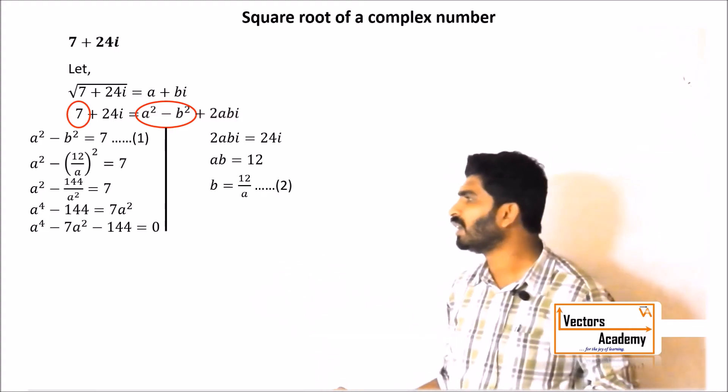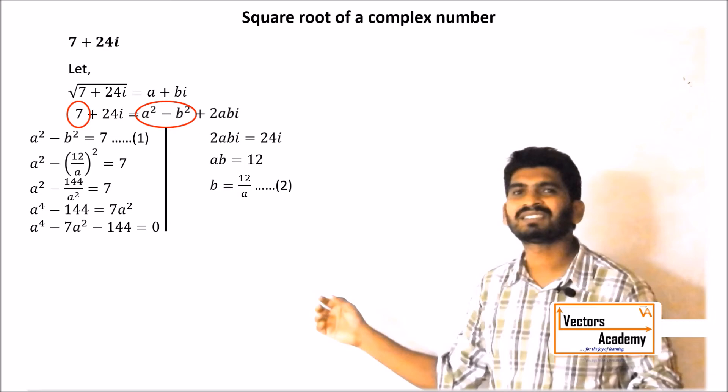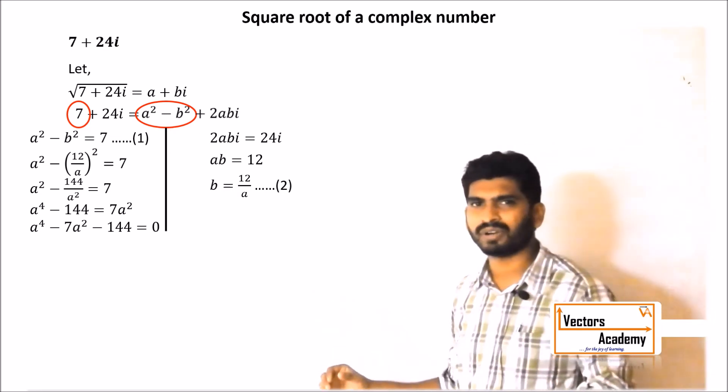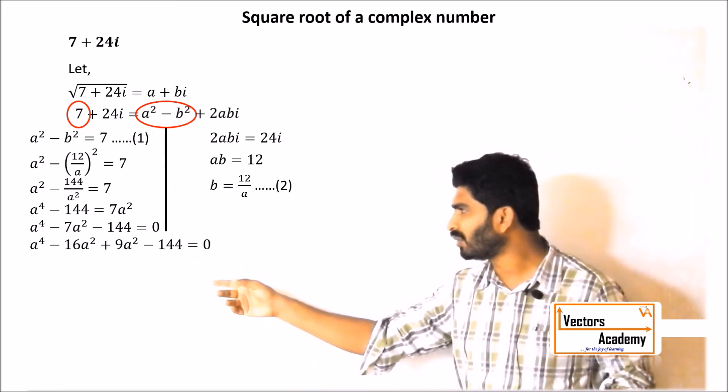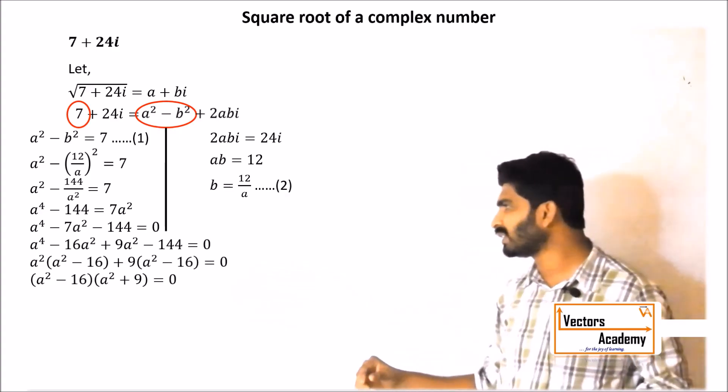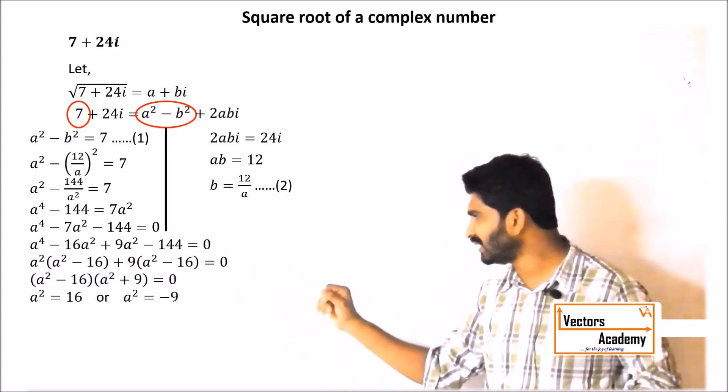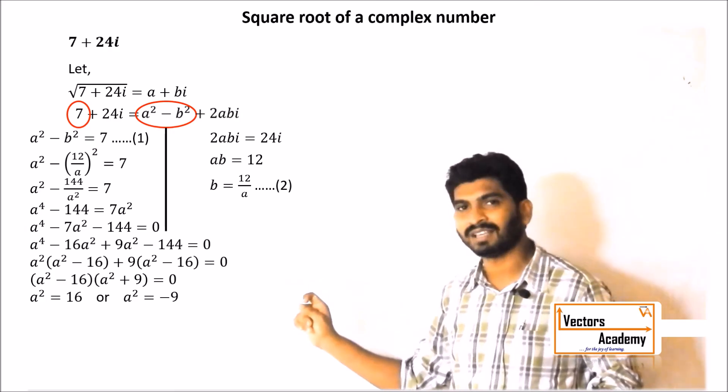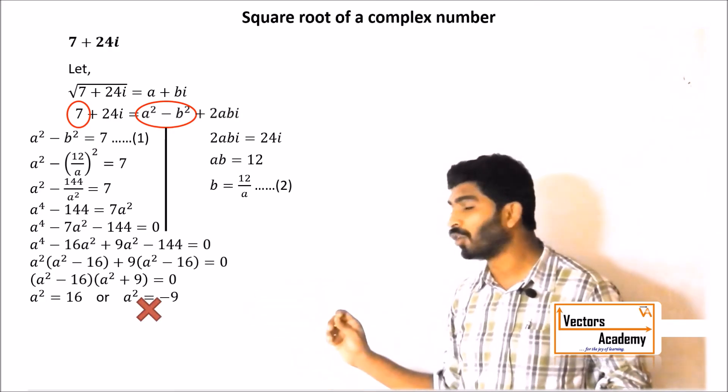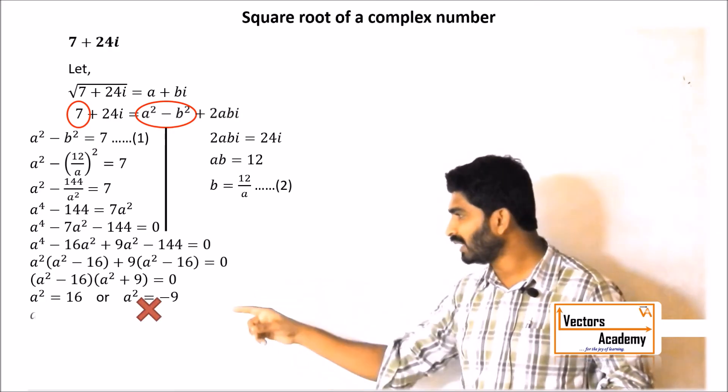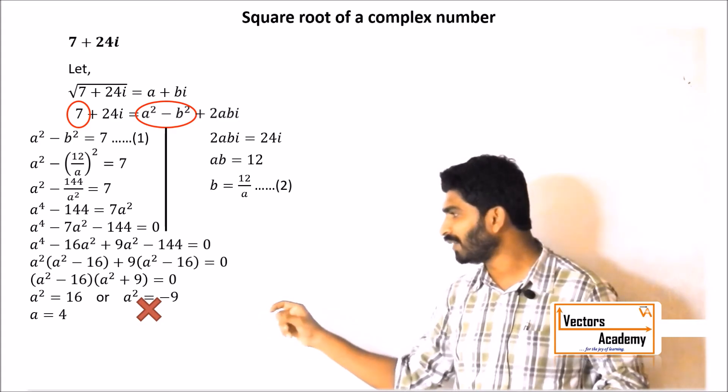This equation can be solved just as a quadratic equation. Solving this equation we get two values of a²: a² equals 16 and a² equals minus 9. The square of any number cannot be minus 9, so a² will be equal to 16, whereas a will be equal to 4.